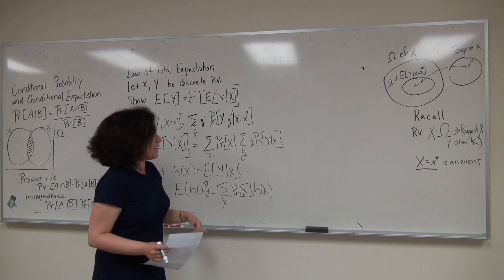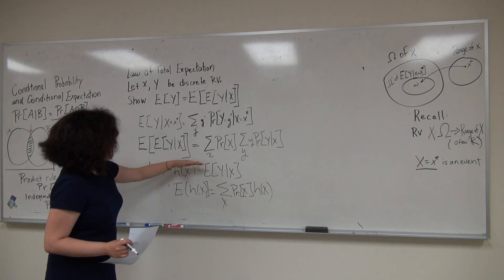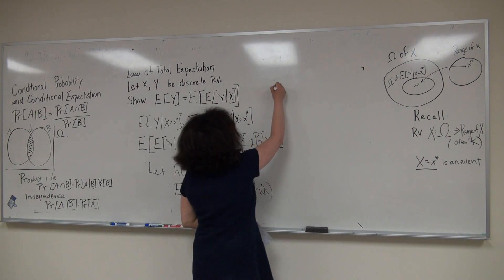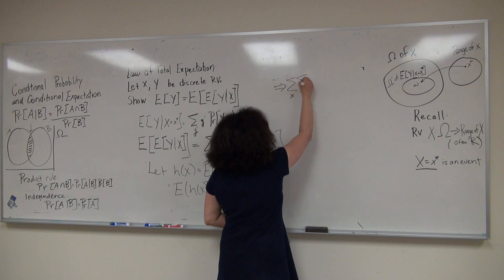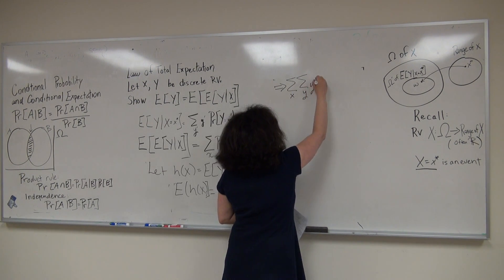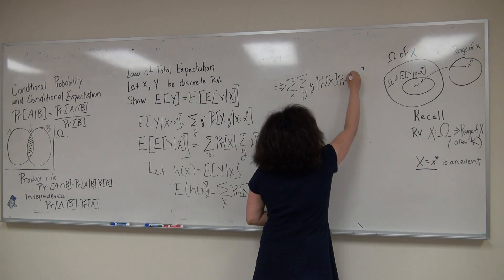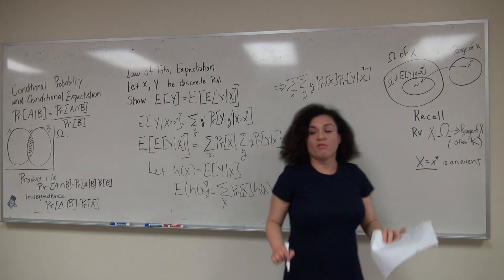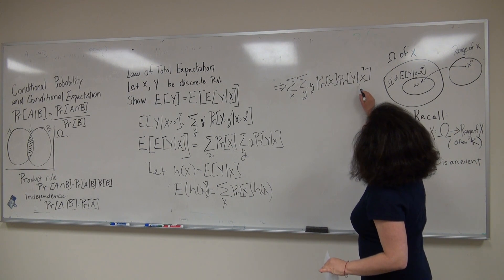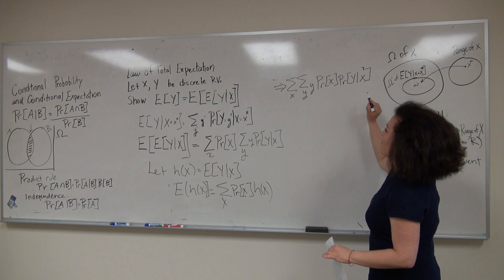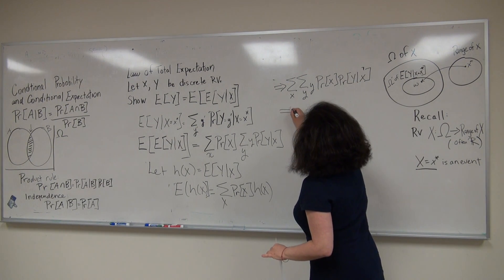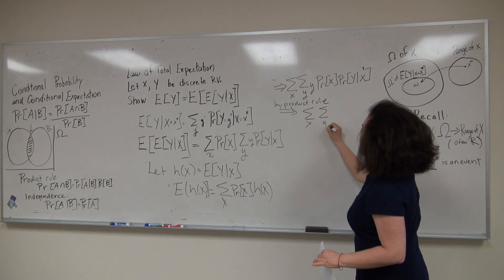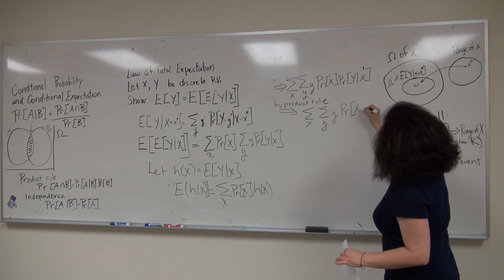We can now make progress quickly with simple steps. When we look at the summation — the expectation of the expectation of Y given X — we can exchange the summation and multiplication. This gives us the summation over X and the summation over Y of y times the probability of X times the probability of Y given X. Recalling the product rule, the probability of Y given X times the probability of X is the probability of Y and X. By the product rule we get the summation over X and the summation of y times the probability of X and Y.